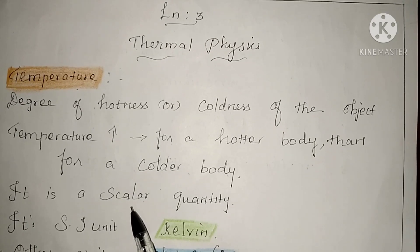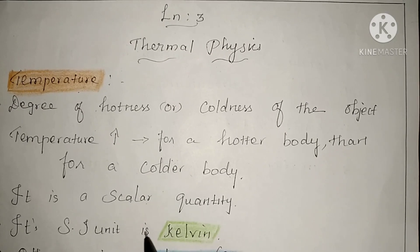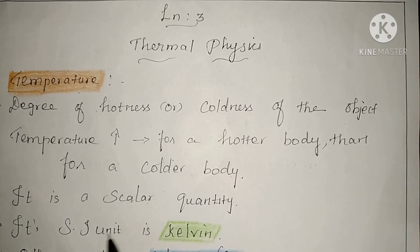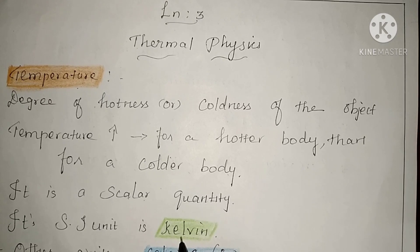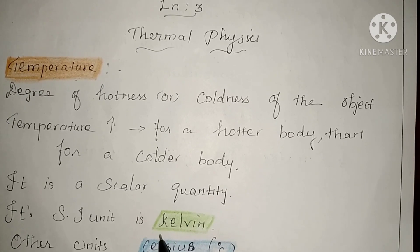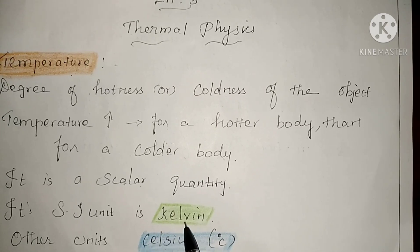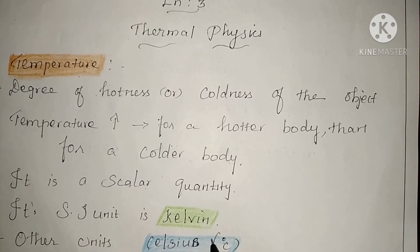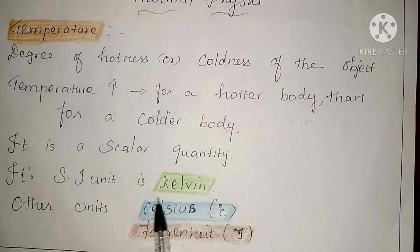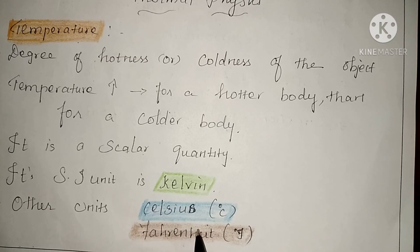The SI unit of temperature is Kelvin. The standard unit of temperature is Kelvin. Other units of temperature include degree Celsius and Fahrenheit. So the SI unit of temperature is Kelvin, and the other units are Celsius and Fahrenheit.